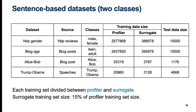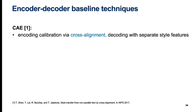We divided each training set into a separate profiler training set and a surrogate training set. The size of the surrogate training set was always 15% of the size of the profiler training set. All three baselines in these sentence-based experiments were encoder-decoder techniques.